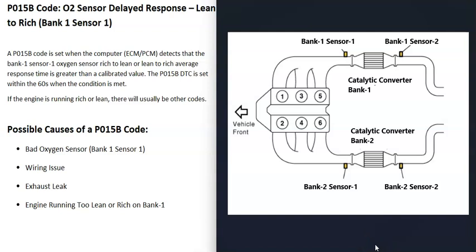There are two sensors on each bank. Sensor one is located before the catalytic converter and is also called the upstream O2 sensor. Sensor two is located after the catalytic converter — sometimes right on it — and is called the downstream O2 sensor.